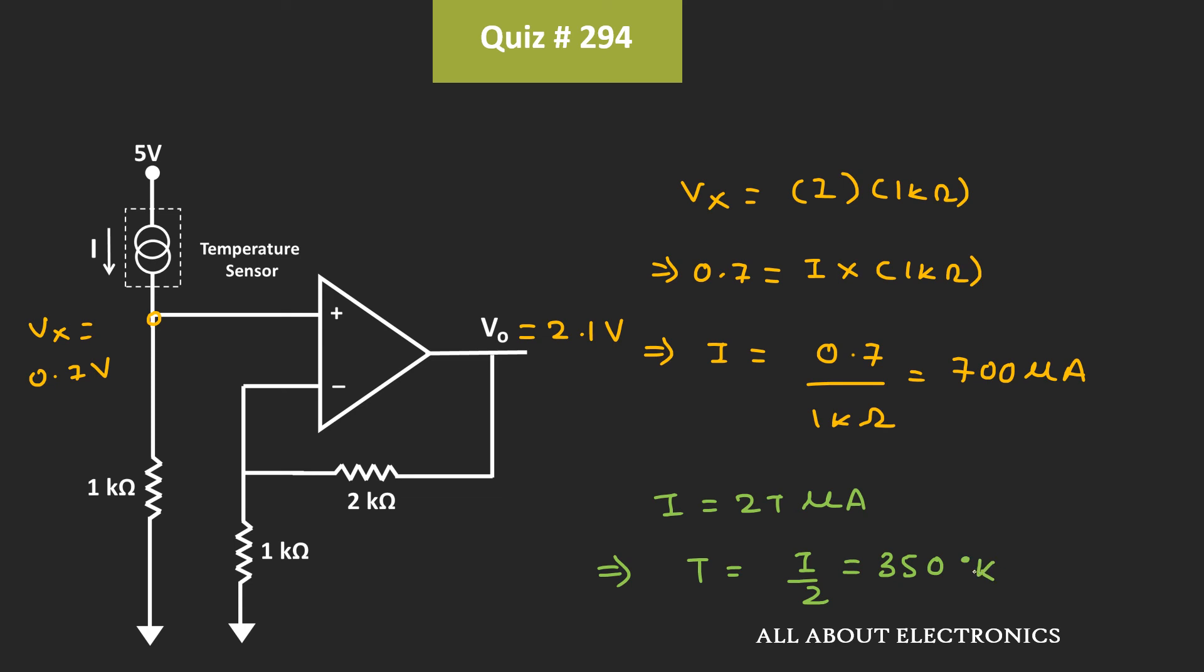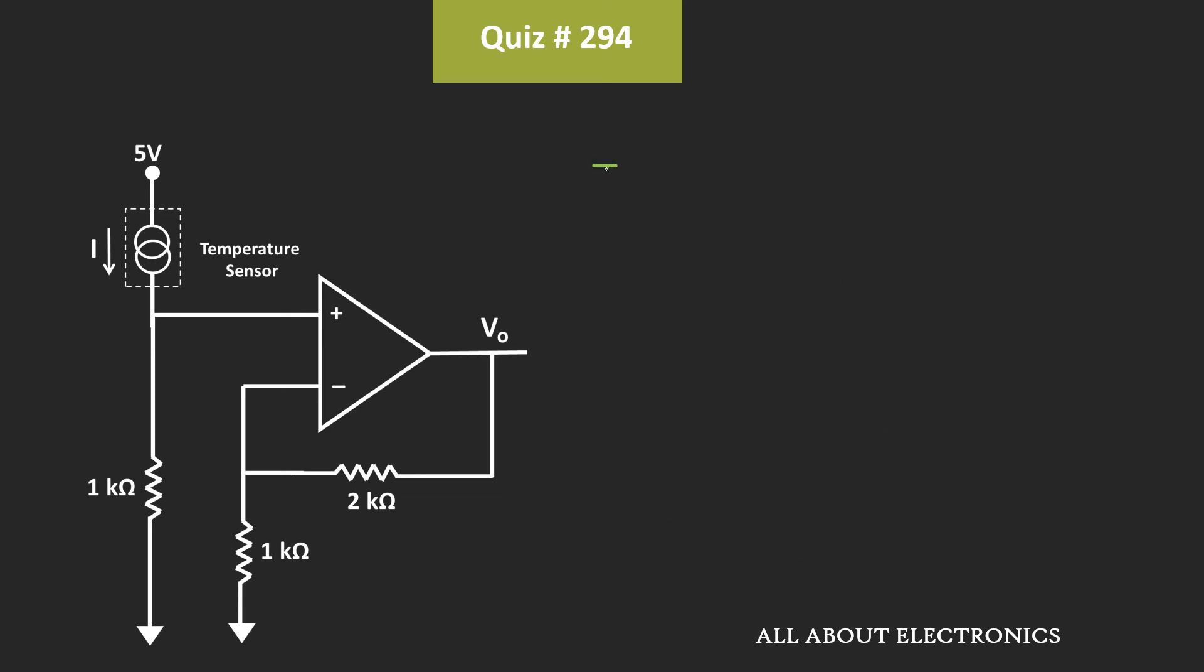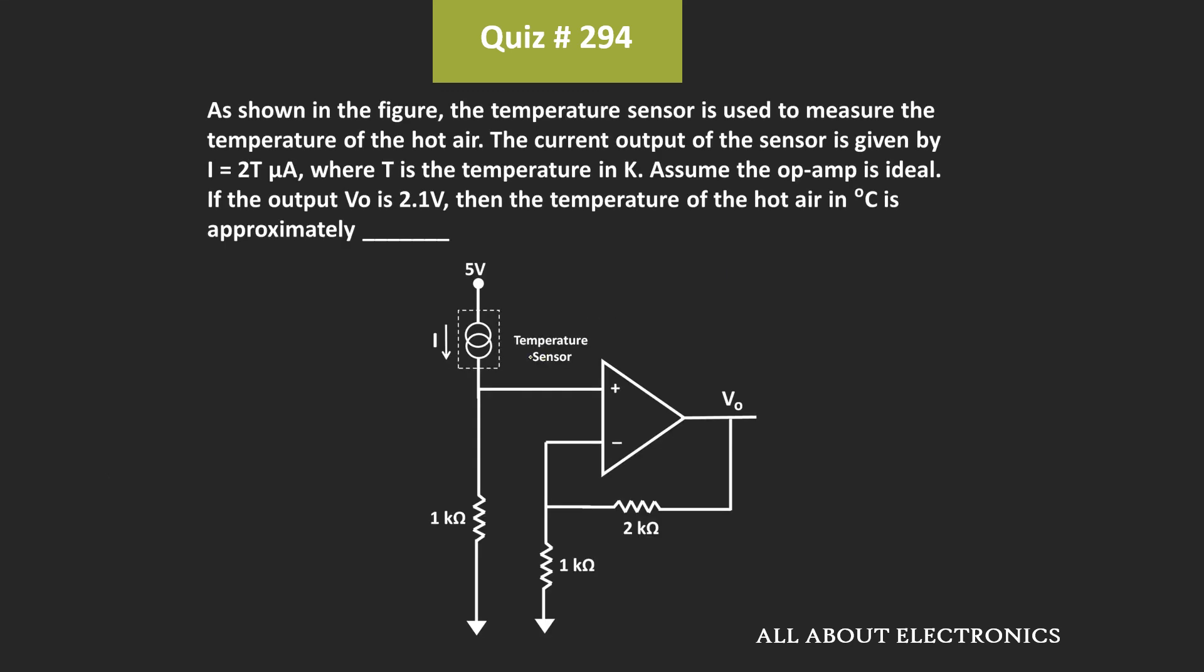Or if we convert it in degrees Celsius, then the temperature in degrees Celsius will be equal to 350 minus 273. That is, roughly equal to 77 degrees. So we can say that, when the output of the op-amp is equal to 2.1 V, at that time, the temperature of the hot air is equal to roughly 77 degrees Celsius.